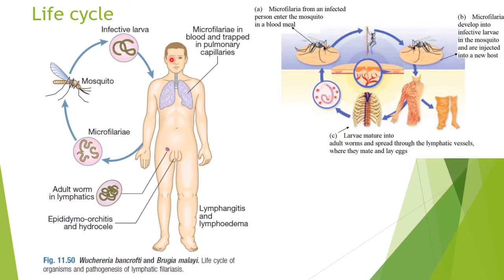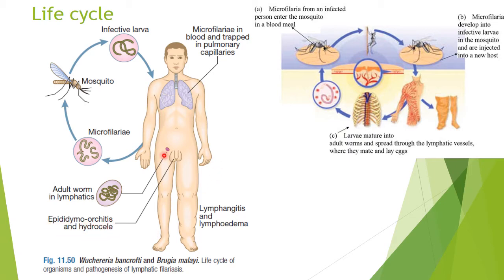In the life cycle, a mosquito carrying an infective larva bites a human with filariasis and takes up microfilariae from the peripheral blood at night. Microfilariae trapped in pulmonary capillaries give rise to tropical pulmonary eosinophilia. Adult worms in the lymphatics block the lymphatic system, causing acute lymphangitis, lymphedema or elephantiasis, and can also cause epididymo-orchitis and hydrocele.